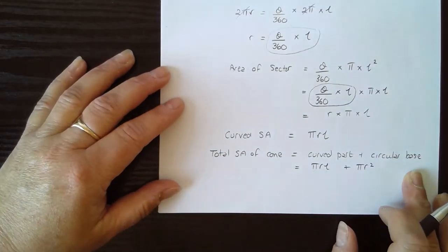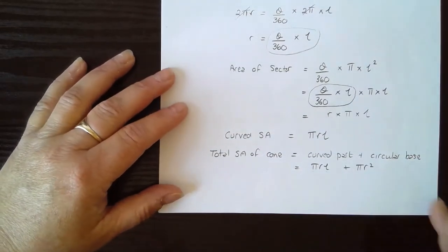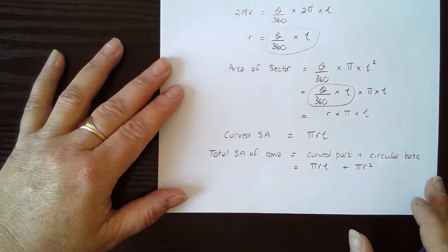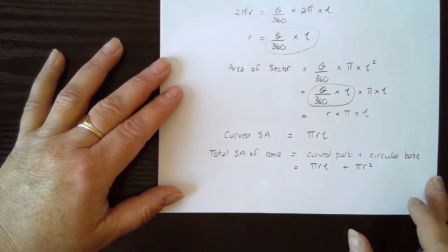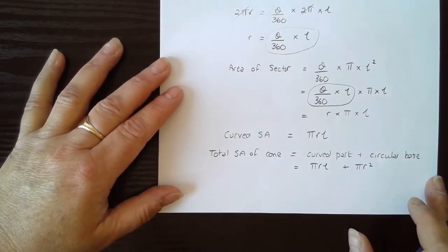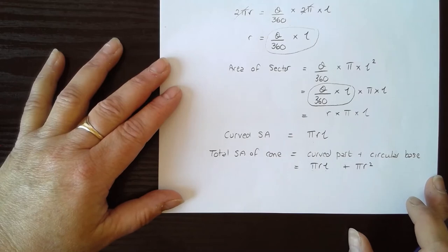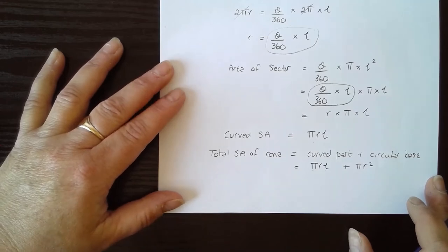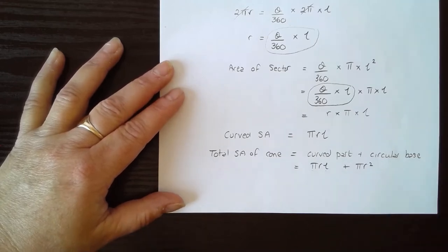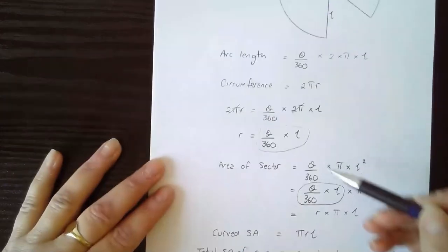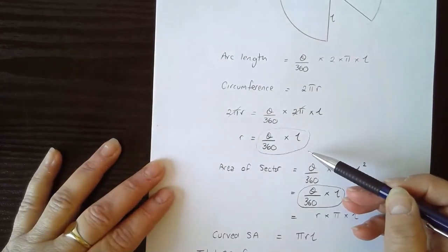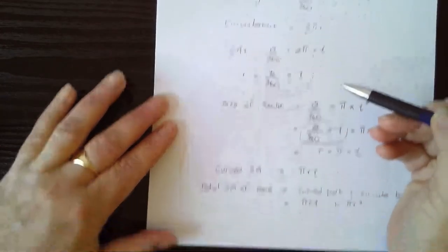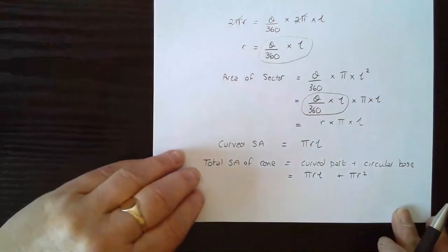The good news is the formula for the volume of a cone and the formula for the curved surface area of a cone will always be given to you in exams. The total surface area formula unfortunately isn't, which is why I said it's worth remembering.